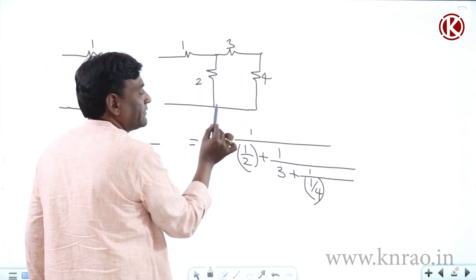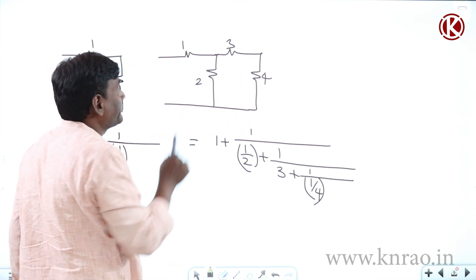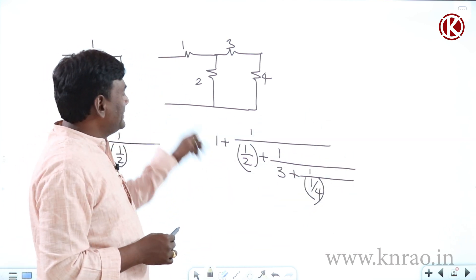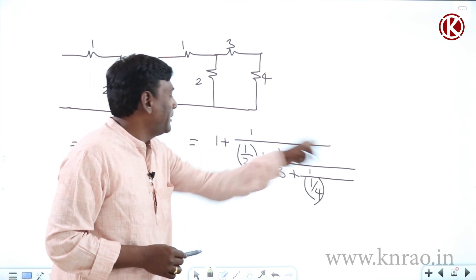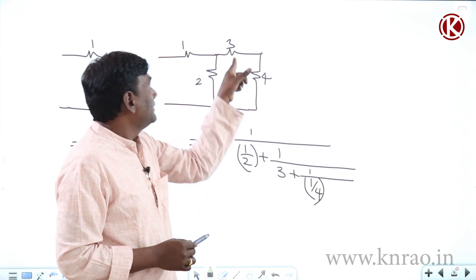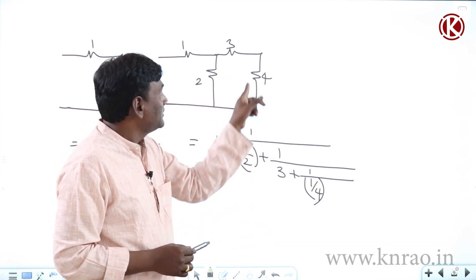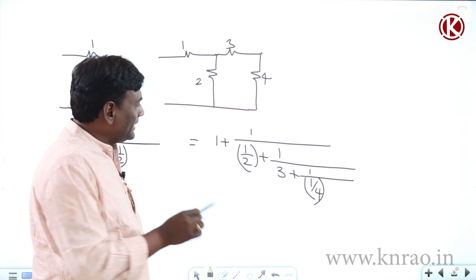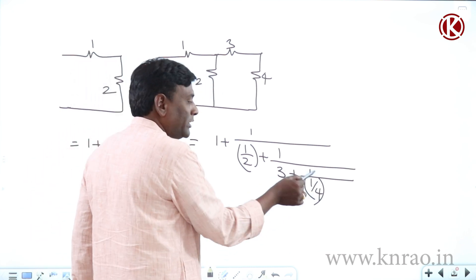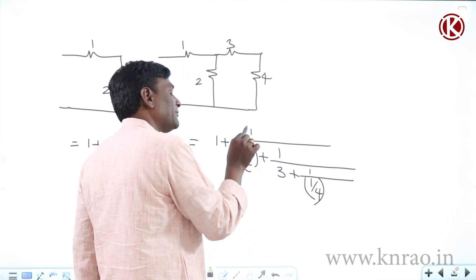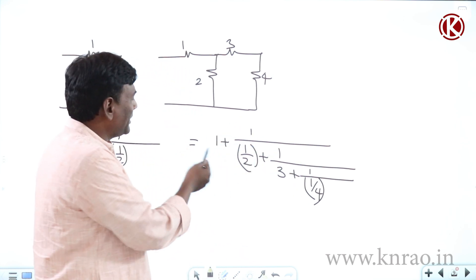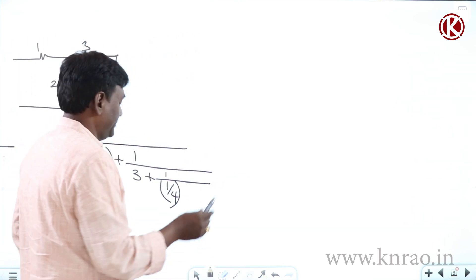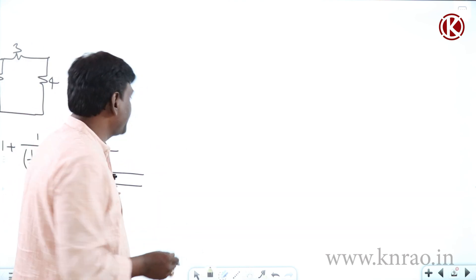So three plus four is seven; seven in parallel with two gives 1.55; plus one gives 2.55. If I rewrite this as a ladder network: 1 series plus parallel combination of 1/2 and series (3 + 1/(1/4)), since 1/(1/4) = 4, four plus three is seven, one over seven in parallel with one over two, inverse gives the same answer 2.55.